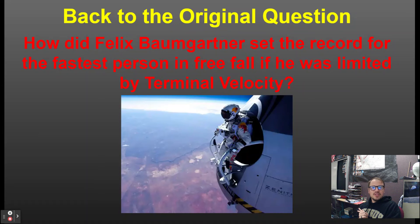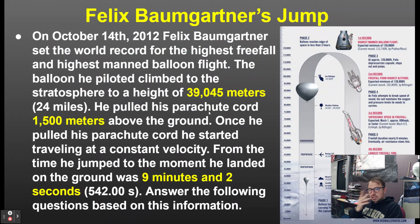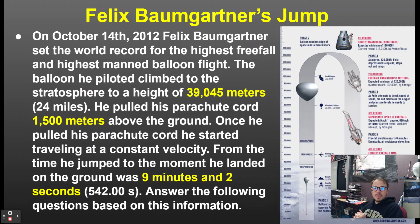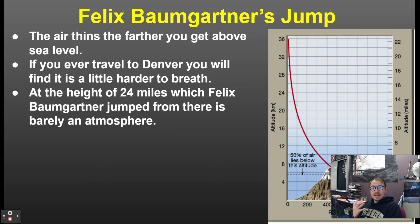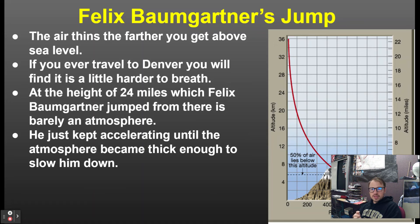On October 14, 2012, Felix Baumgartner set the world record for the highest free fall and highest manned balloon flight. The balloon climbed to the stratosphere at 39,045 meters (24 miles), and he pulled his parachute cord 1,500 meters above the ground, after which he traveled at constant velocity. Total time from jump to landing was nine minutes and two seconds — 542 seconds. At the height of 24 miles there's barely any atmosphere, so he just kept accelerating until the atmosphere became thick enough to slow him down.